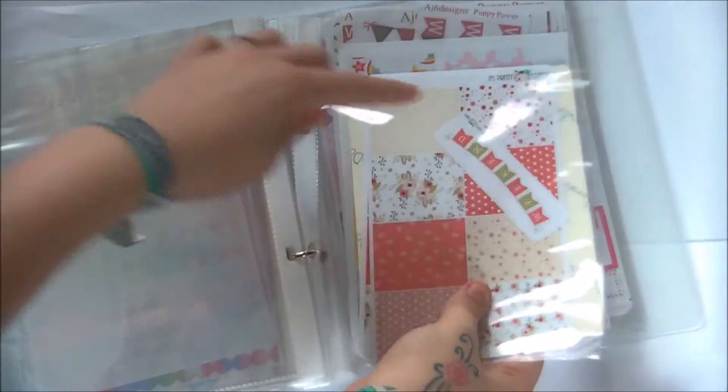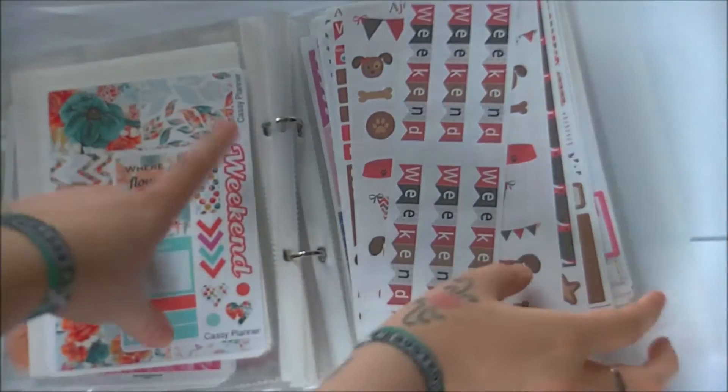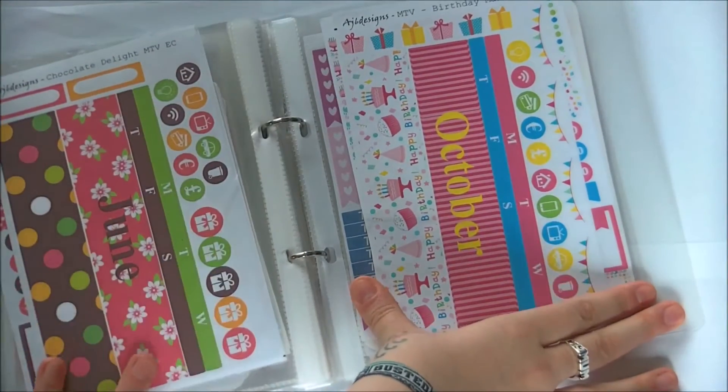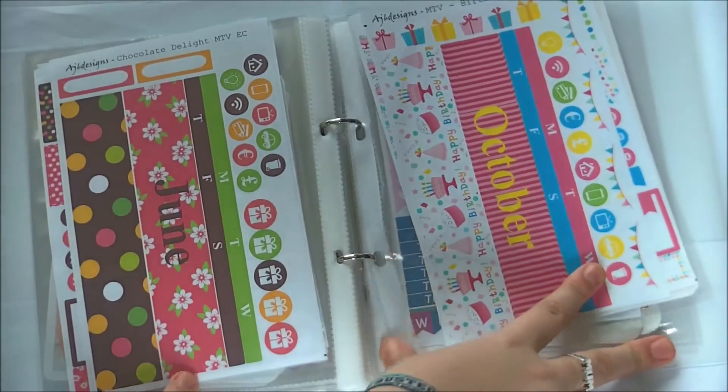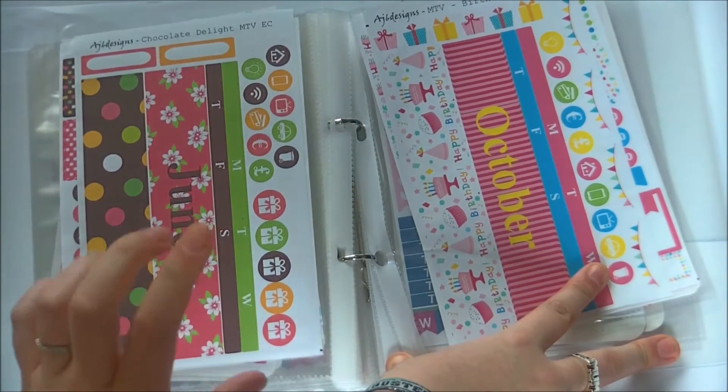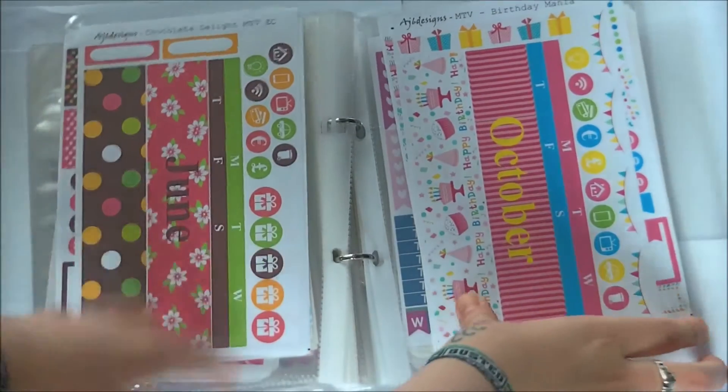I have a set from It's Pretty Crafty, Ooderma Doodles, Plump Planner, Cassie Planner, AJ6 Designs. These are the monthly plan with me sets. I'm just about to film a plan with me using this June set from AJ6 Designs.